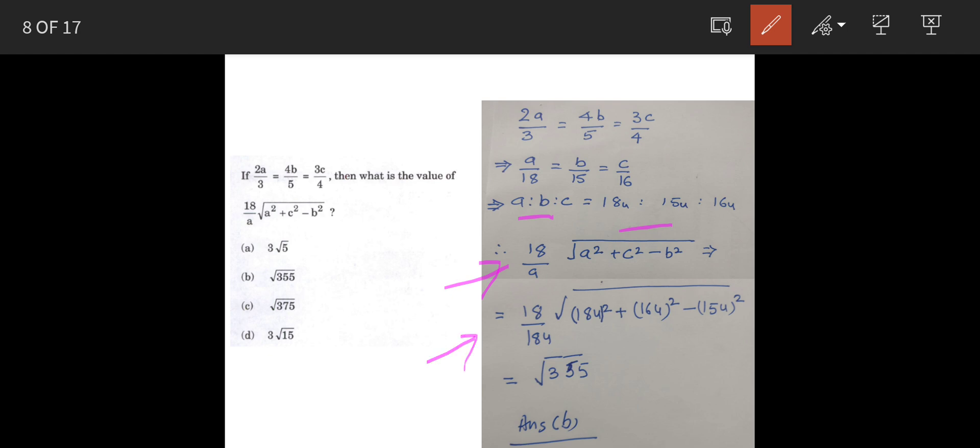So, it becomes 18 upon 18u, then 18u square, 16u square and 15u square. So, when you solve this, so you will get your answer is square root 355. So, answer is option b.